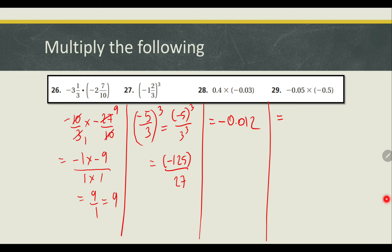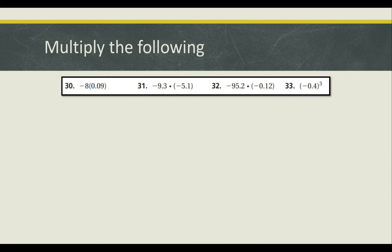The next one will be positive because negative times negative gives a positive answer. We have 0.05 multiplied with 0.05, which is equal to 0.025 — positive because we are multiplying two negatives. The following one is pretty straightforward: the answer will be negative, and when we multiply them we get negative 0.72.